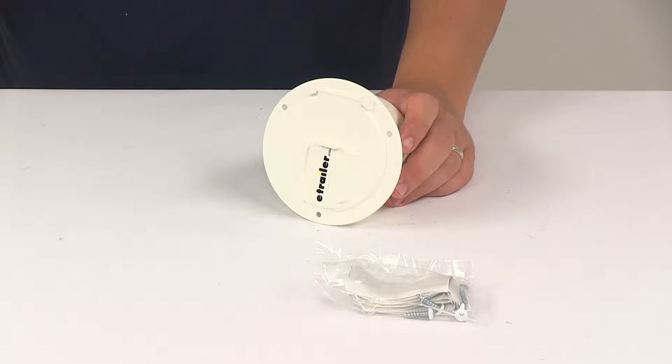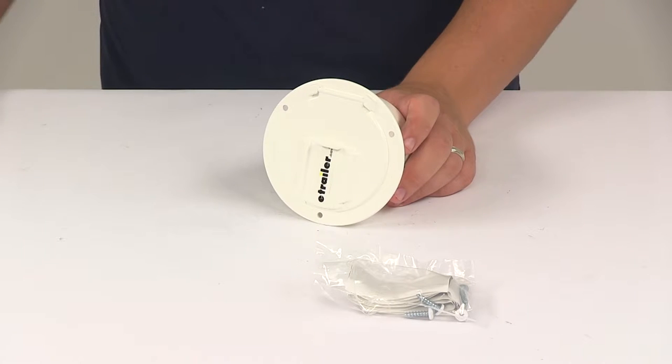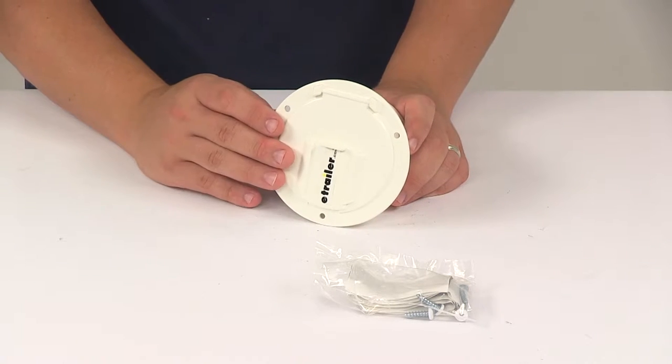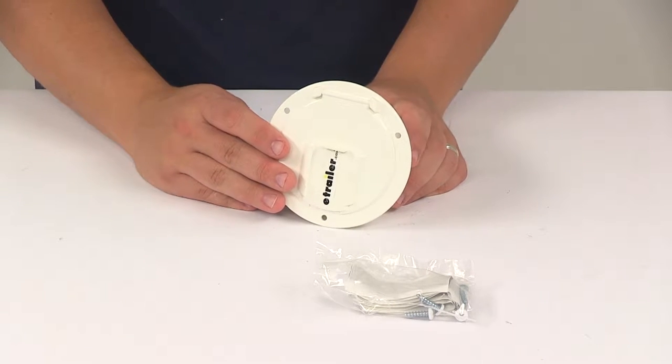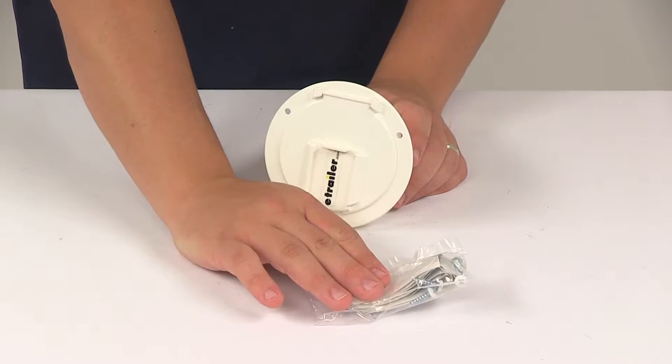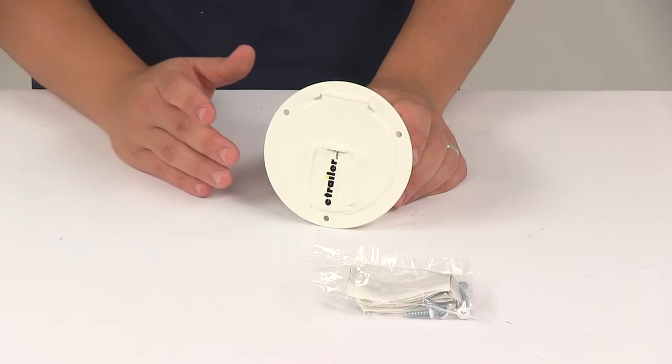Today we're going to be taking a look at the Valterra electric cable hatch for RVs. This is for use with electrical cables up to 50 amps. It does come with the installation putty tape and the necessary screws or hardware.